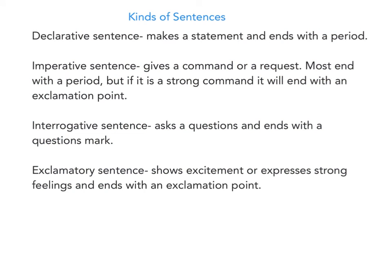The last thing on your test is kinds of sentences. A declarative sentence makes a statement and ends with a period — this is most sentences. An imperative sentence gives a command or a request. Most end with a period, but if it is a strong command, it will end with an exclamation point — so you can have either a period or an exclamation point.